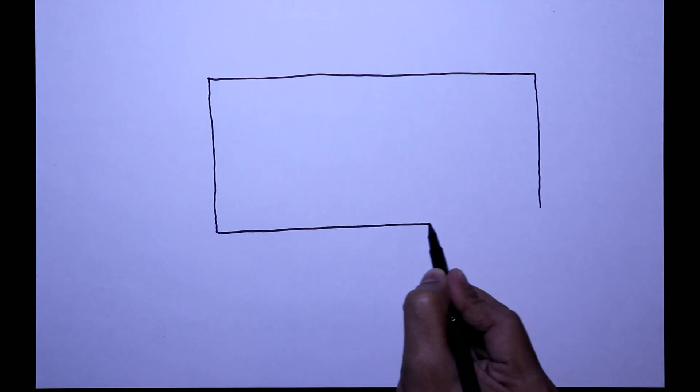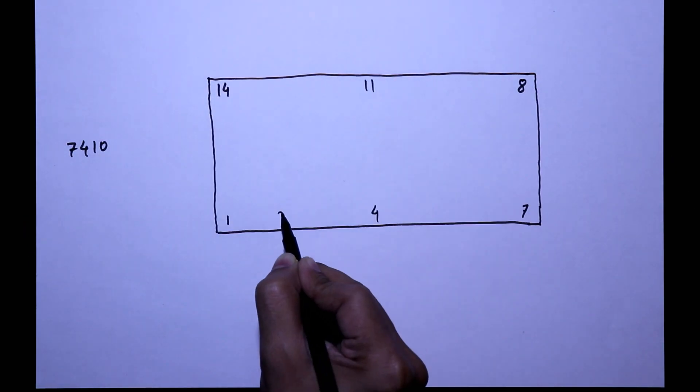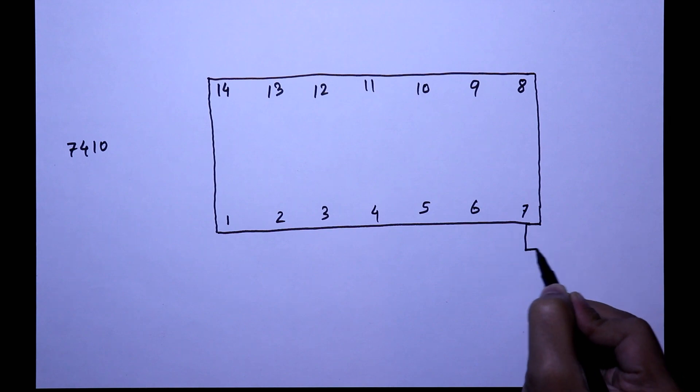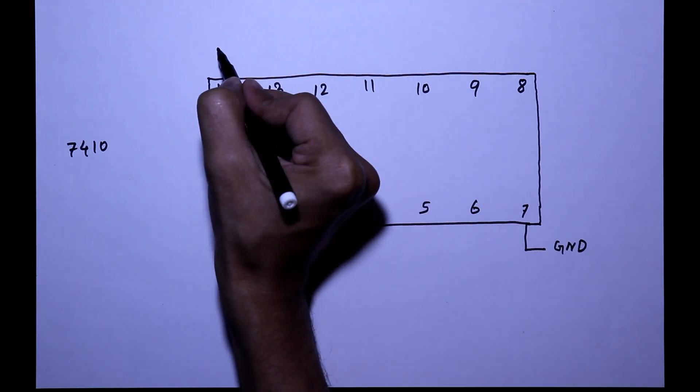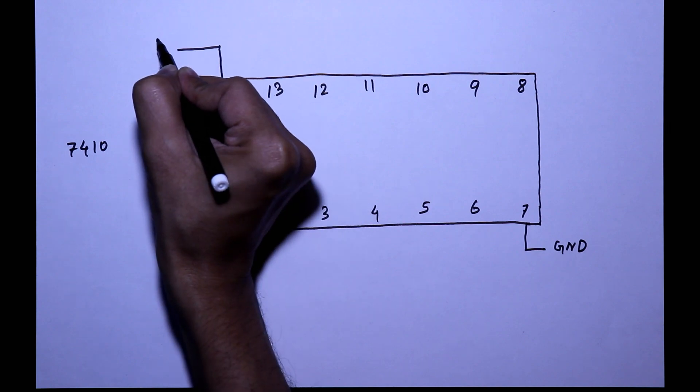Here it is IC 7410. It has 14 pins. Pin number 7 is ground pin and pin number 14 is VCC. We have to connect plus 5 volt.